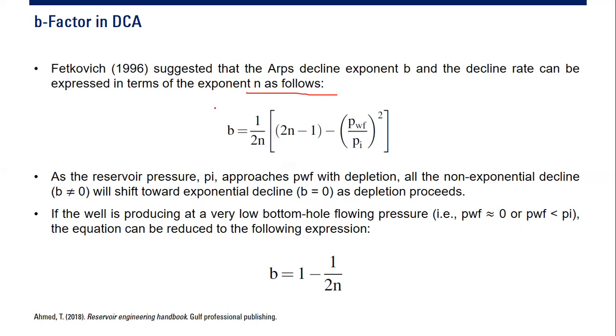The correlation between b and n is expressed in this formula: b equals 1 divided by 2n multiplied by something in the bracket. As the reservoir pressure pi approaches bottom hole flowing pressure pwf, all the non-exponential decline will shift toward exponential decline b equals 0 as depletion proceeds.